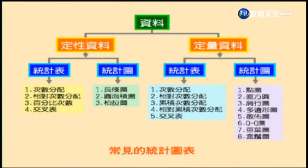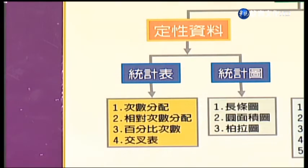為了便於理解、分析甚至做後續整理比較，我們有必要將統計資料按照一些分類的標準，以表格或圖形的方法來呈現，讓看圖看表的人能夠快速地抓住重點。不同的資料形態所用的統計表跟統計圖也會不一樣。基本上資料分為定性資料跟定量資料兩種。對於定性的資料，在統計表上較常用的有次數分配表、相對次數分配表、百分比次數或交叉表等等。